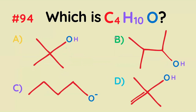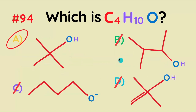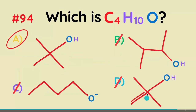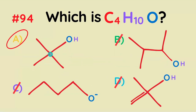Which of these is C₄H₁₀O? This is all about process of elimination. This one can't be right because it has a pentavalent carbon. This one has one too many carbons, and this one has a negative charge. So A is going to be the correct answer.